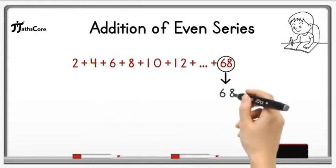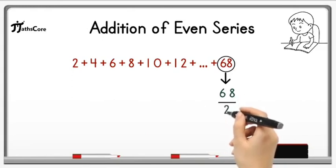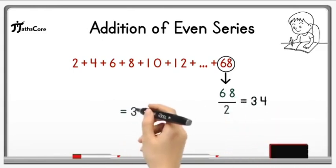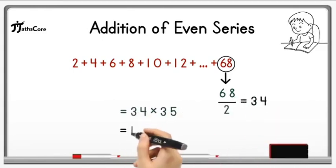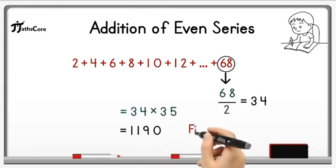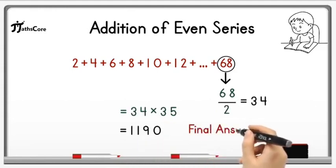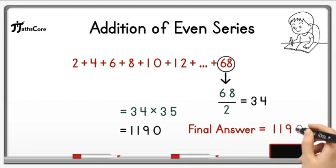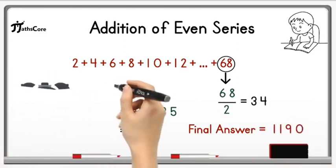So 68 divided by 2 is equal to 34 and multiply this 34 with its consecutive number 35. So 35 multiplied by 34 is equal to 1190 which is your final answer. If you add all these numbers together then you will get answer 1190.